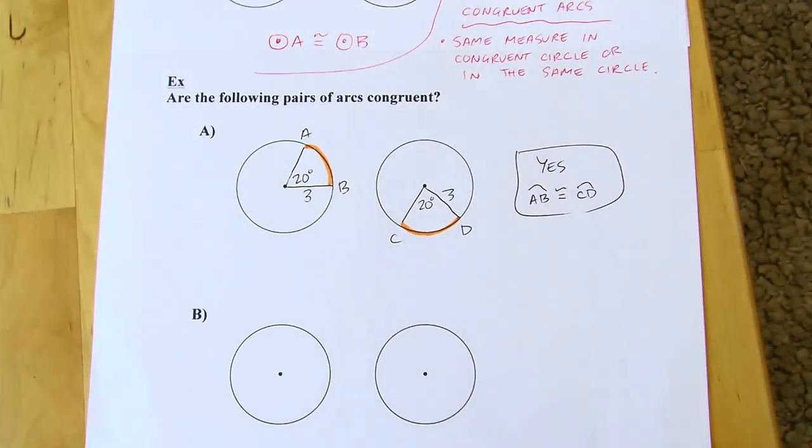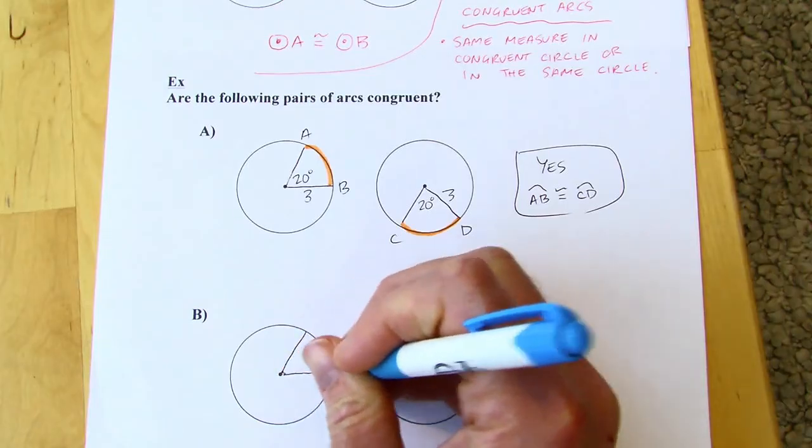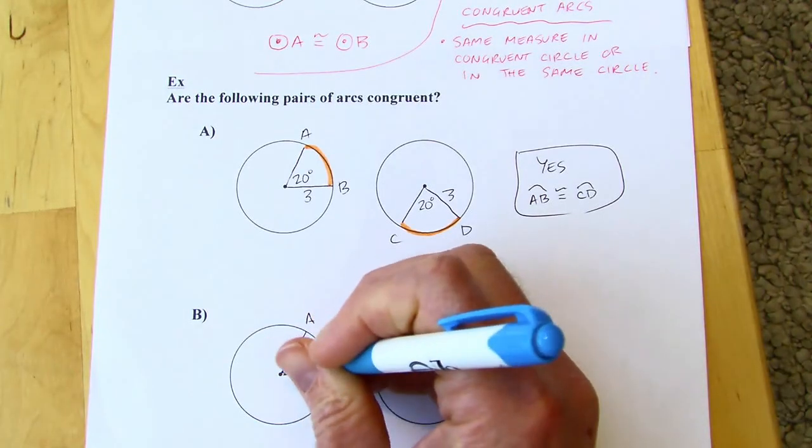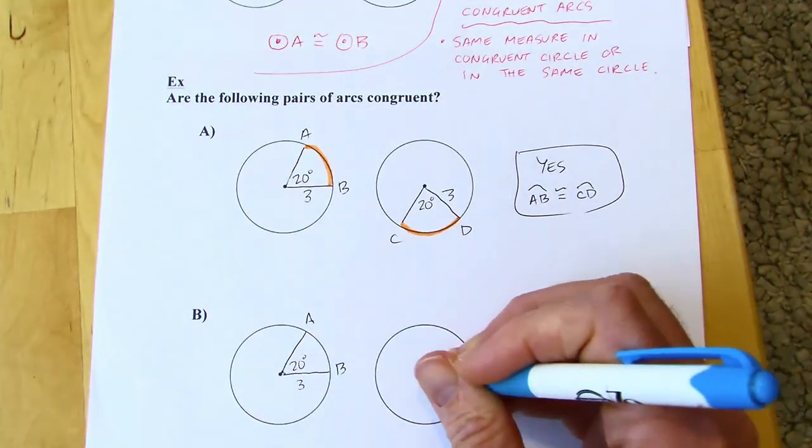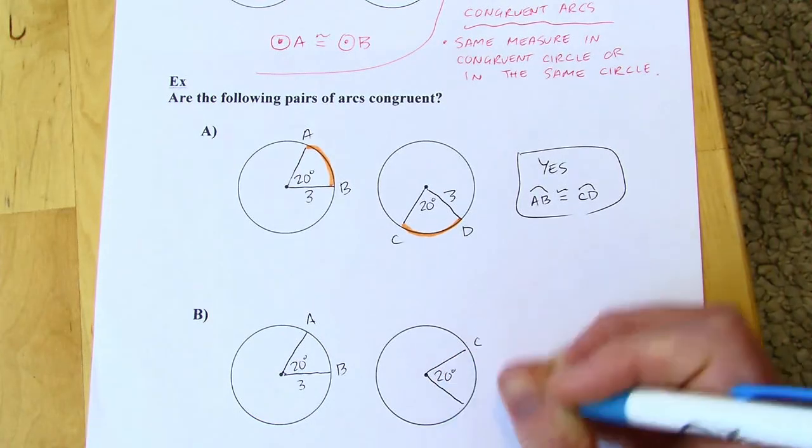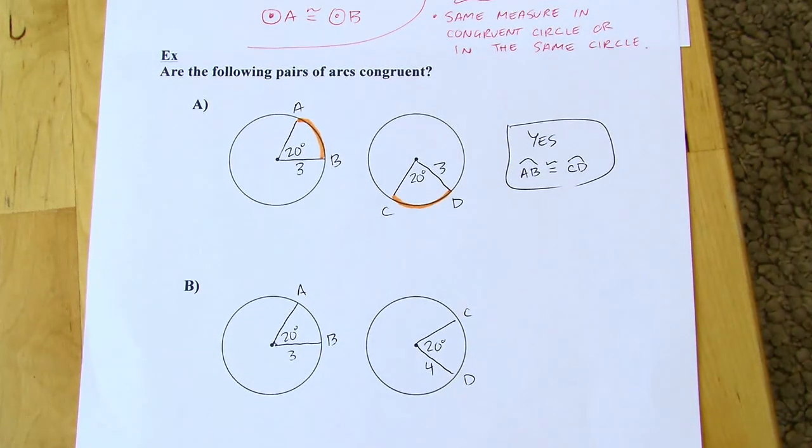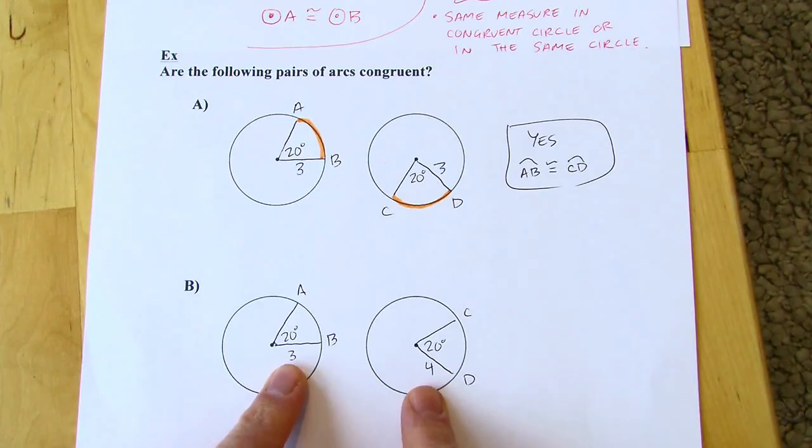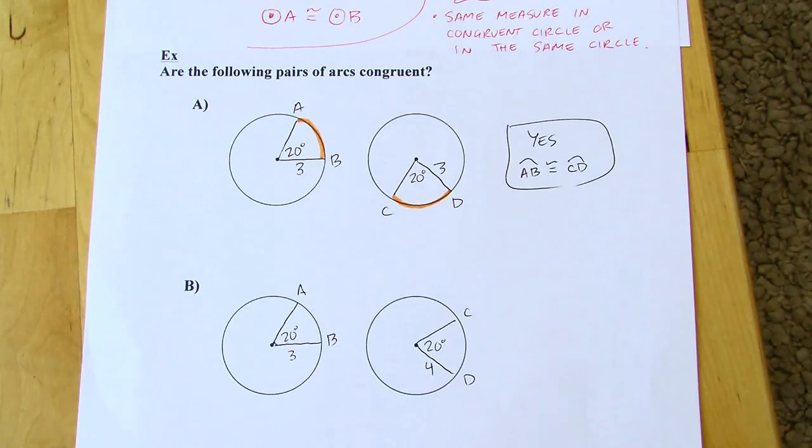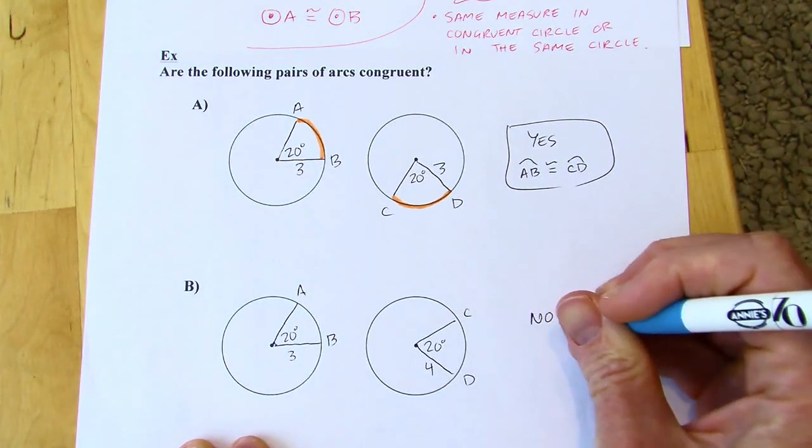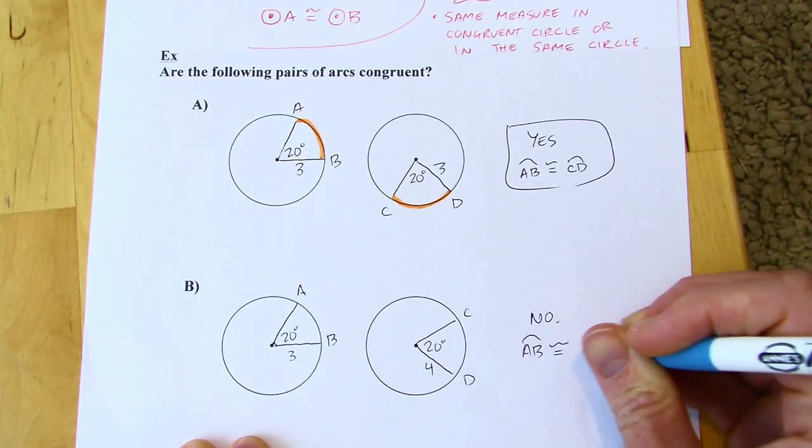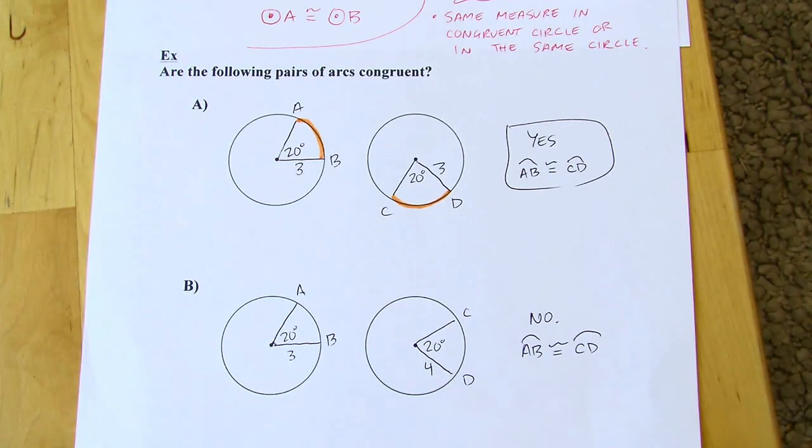I'm going to put in some more given info on this next example. And, you know, they do have the same measure. So I've got one of the two requirements fulfilled. But the radius isn't the same, even though it appears to be the same. It's marked one's 3 and one's 4. So that's going to be a no. So in this example, those are not congruent. And if you're asked for a reason, the circles aren't congruent. So the arcs aren't going to be congruent. And that's it. So I will see you soon. Thanks.